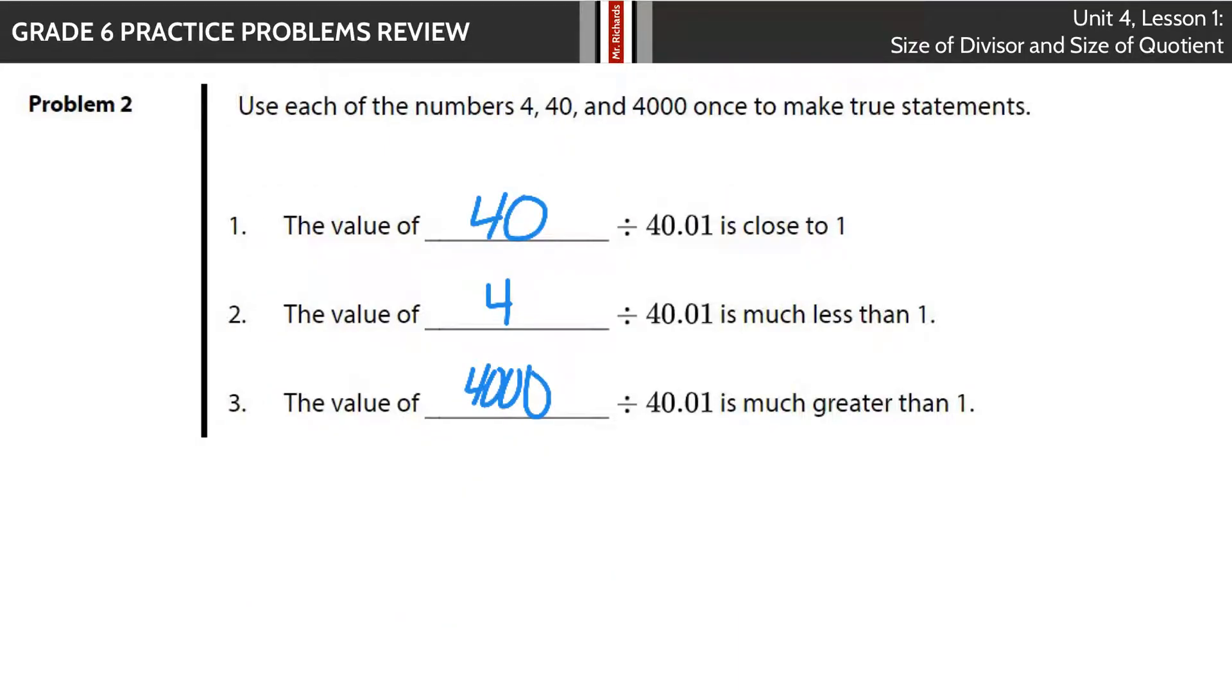In Question 2, we're using 4, 40, and 4,000 once to make true statements. What's going to be close to 1? If your second number is 40.01, what can you divide to get an answer close to 1? 40 divided by about 40 is going to be close to 1. If you're getting smaller than 1, you need a small number. 4 divided by 40.01 is much less than 1. If you have a really big number divided by a small number, you're going to have something much greater than 1.